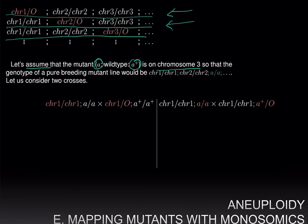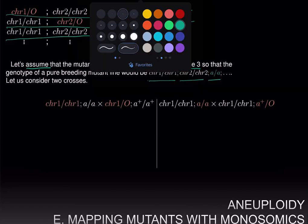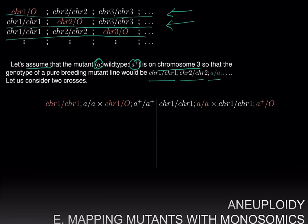If we had a pure-breeding mutant, its genotype would be chromosome 1 over chromosome 1, chromosome 2 over chromosome 2, little a over little a, and so on. Now let's consider two crosses. In the first cross we are going to cross the monosomic for chromosome 1 to our mutant, and we just need to track chromosome 1 and chromosome 3.